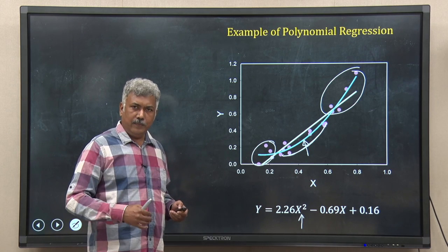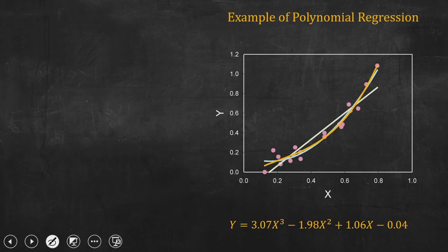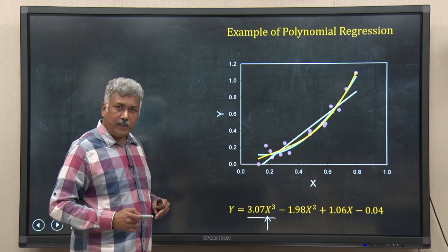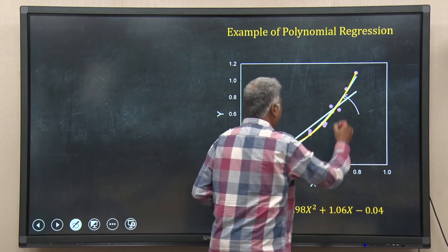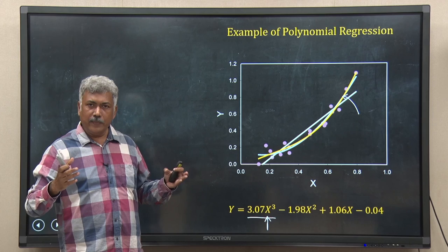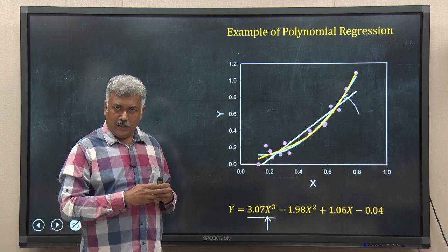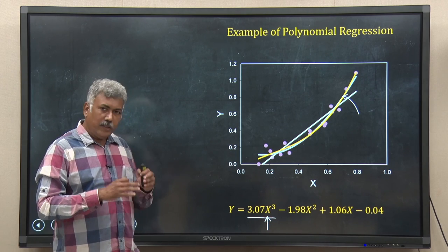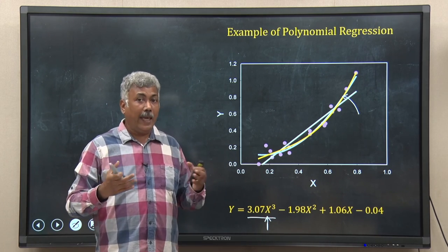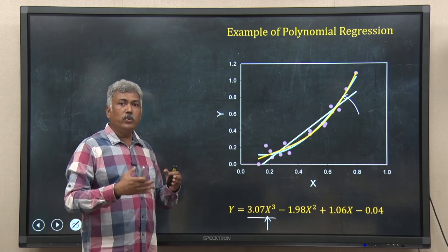I moved further — if I have gone up to x squared, why not x cubed? I applied polynomial regression for a cubic equation, where the highest degree is x to the power 3. That curve is shown in yellow, and you can see it has fitted nicely to the data. In fact, I generated this data using a cubic equation, which is why the cubic polynomial regression works so well. That is how you can step by step fit a polynomial — here it is a polynomial of degree 3.